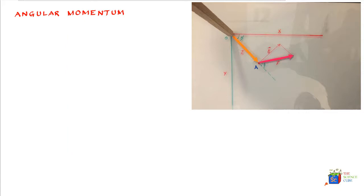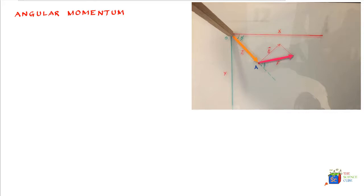In fact, we will study this part as well in the subsequent lessons. So consider a particle of mass M having a linear momentum MV, here denoted by the symbol P. And this particle moves through point A in the XY plane.